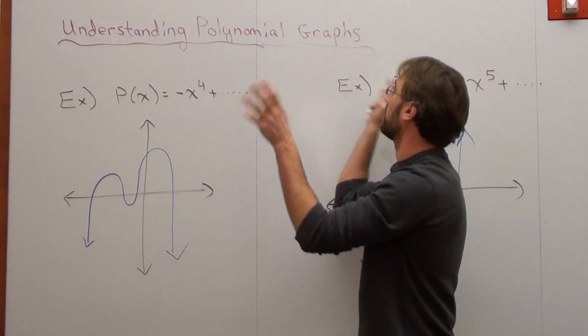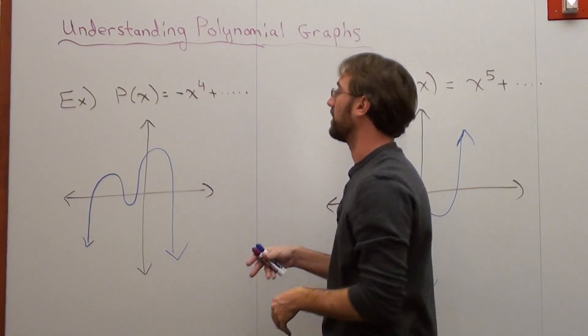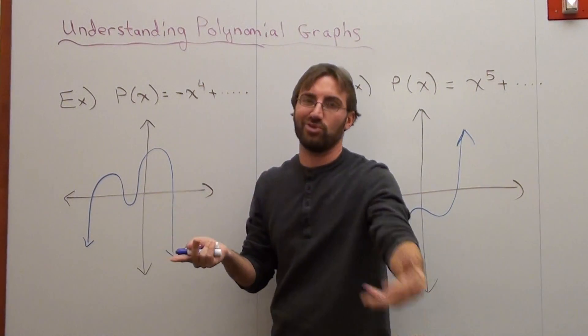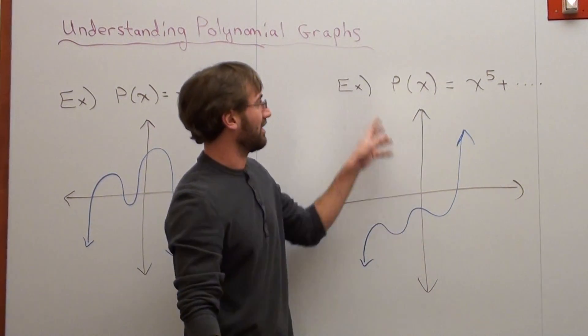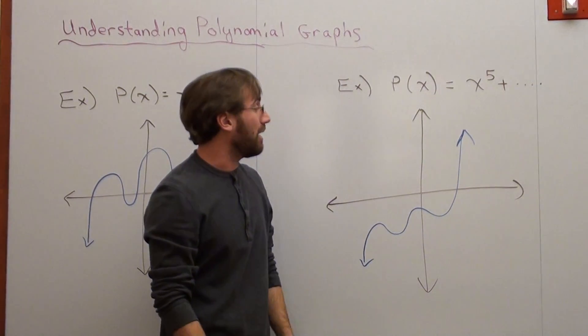Hello again. So I'm closing off this understanding polynomial graphs. We're going to do zeros pretty soon, but I use p of x. You can use y or f of x or anything that you want. I probably didn't phrase it in the last lesson, but I know I've been saying it before. I've got two examples.